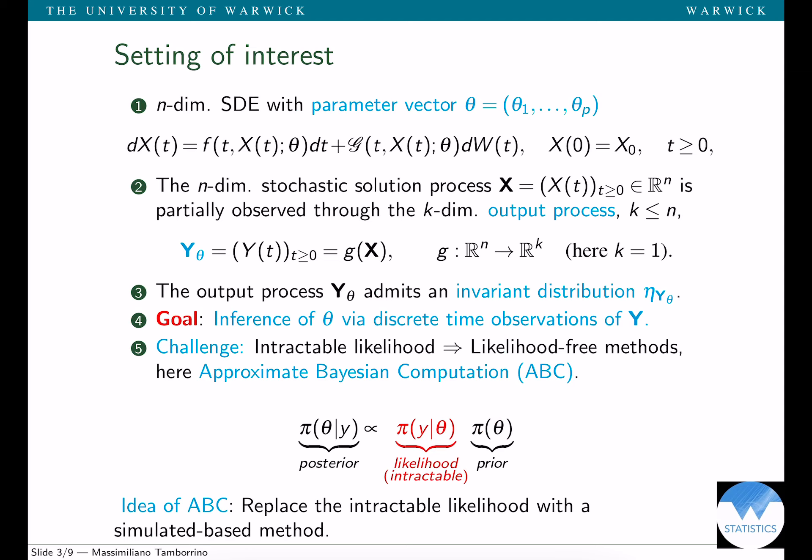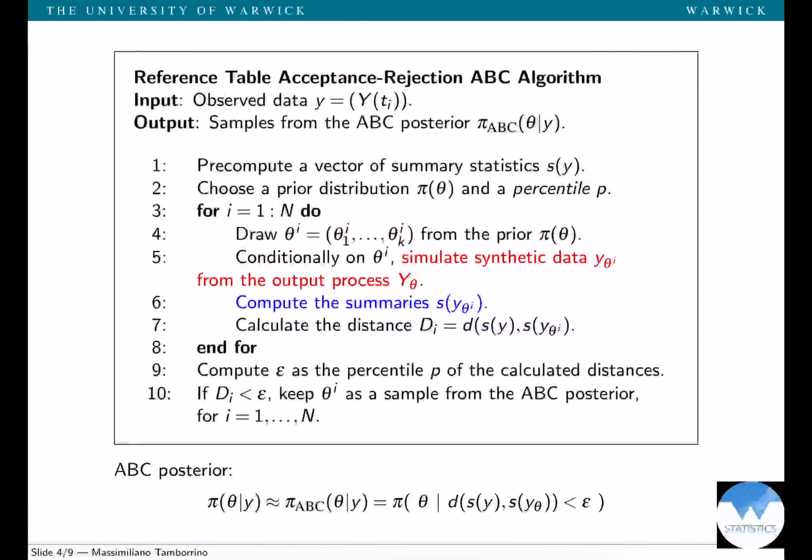Unfortunately, we're dealing with complex models that don't have an available or known likelihood, so we're dealing with intractable likelihood. For this reason we're considering likelihood-free methods, and in particular we're focusing on approximate Bayesian computation. What is the idea behind that? I'm going to present the simplest acceptance-rejection ABC algorithm.